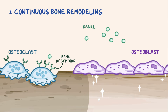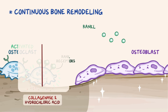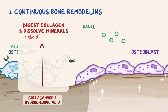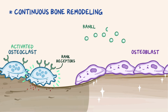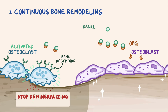When RANK-L binds to the RANK receptor, it activates the osteoclasts, and they start secreting lysosomal enzymes like collagenase as well as hydrochloric acid. Together, they digest the collagen protein and dissolve the minerals that make up the bone matrix. Once there's been sufficient bone demineralization, the osteoblasts secrete another substance called osteoprotegerin, or OPG for short, which binds RANK-L and prevents it from activating the RANK receptors. This causes the osteoclasts to stop demineralizing the bones.